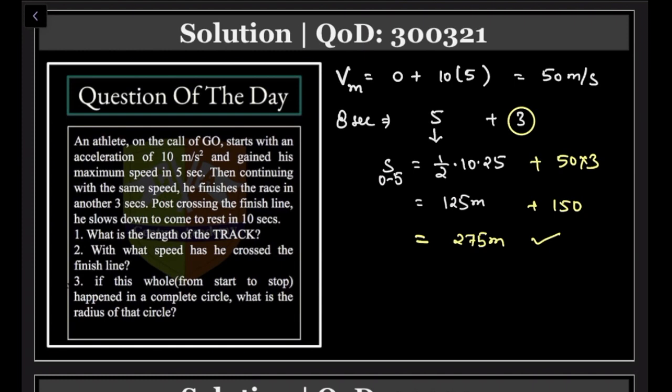Next, after crossing the finish line, he slows down to come to rest in another 10 seconds. So final velocity is 0, initial velocity is 50 at the time of crossing the finish line. We don't know a, but it has to be negative because it is retardation, and time is another 10 seconds.